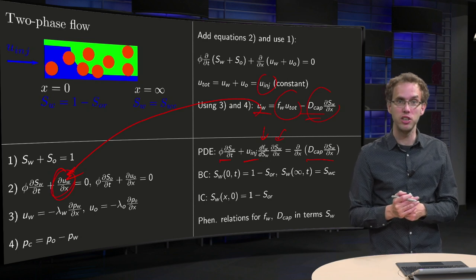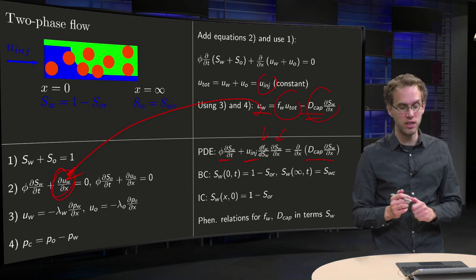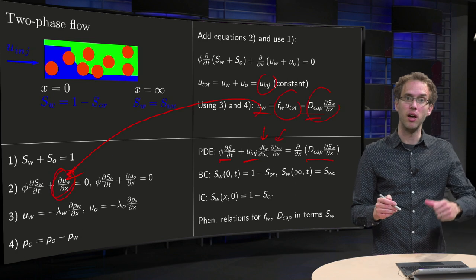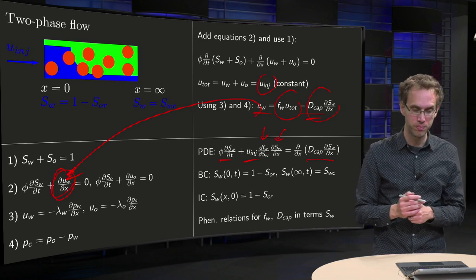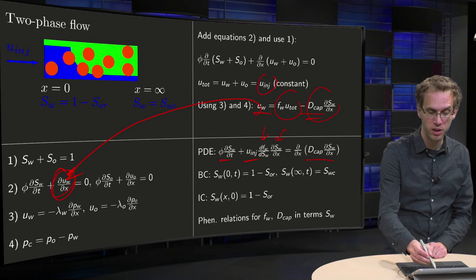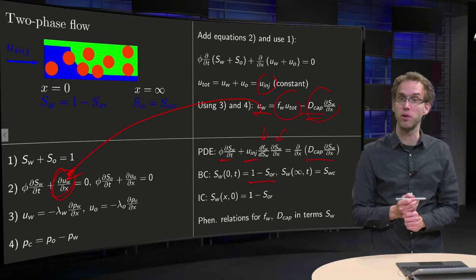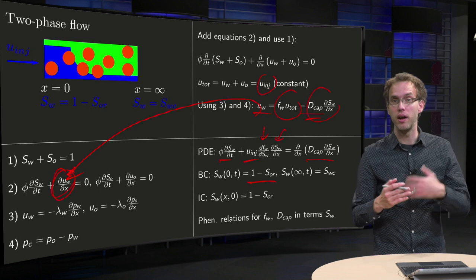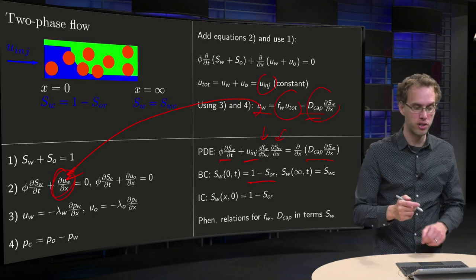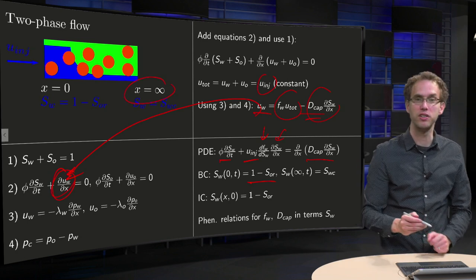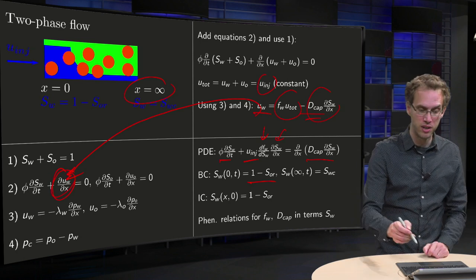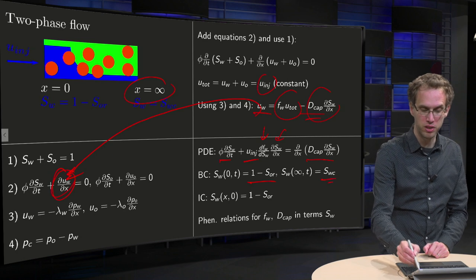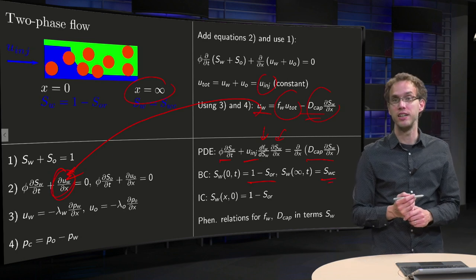You also have boundary and initial conditions. That's easy in this case. Your boundary condition on the injection side: you are injecting water, so water saturation equals 1 minus s_or. At x equals infinity, far away from injection, you don't see yet what you injected, so saturation equals s_wc.